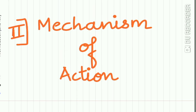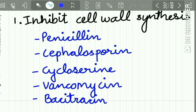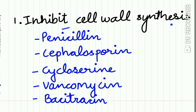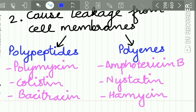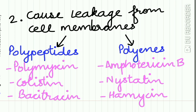The second system of classification is depending upon the mechanism of action. The first group includes drugs which inhibit cell wall synthesis, like penicillin, cephalosporin, cycloserine, vancomycin, and bacitracin. The next group contains drugs which cause leakage of the cell membrane, further divided into polypeptides — polymyxin, colistin, and bacitracin — and polyenes — amphotericin B, nystatin, and hamycin.